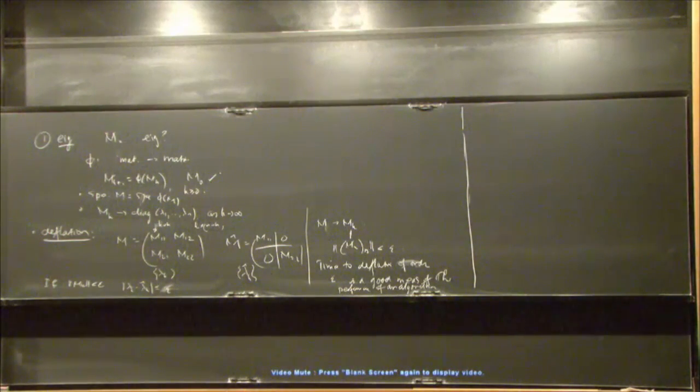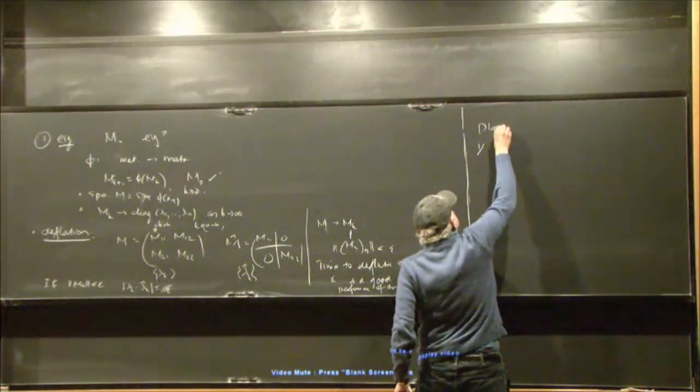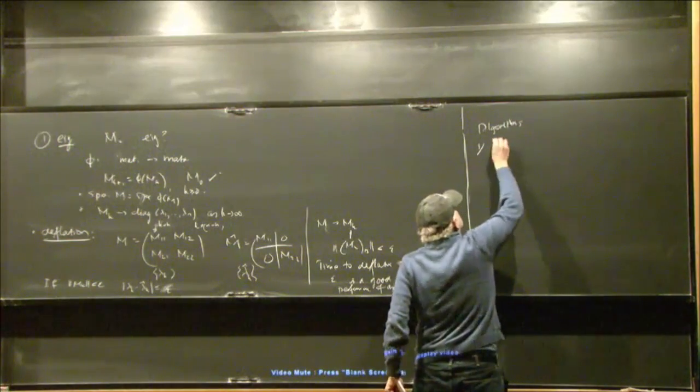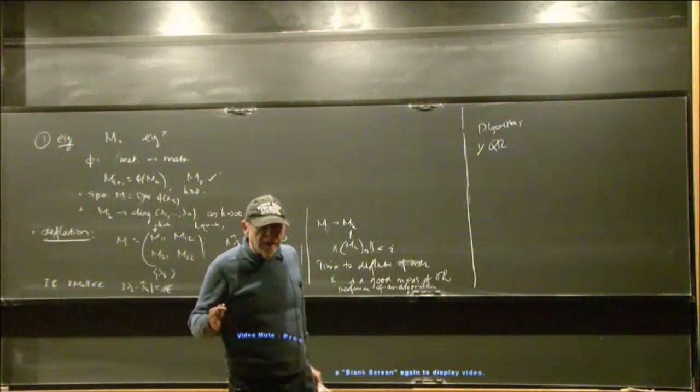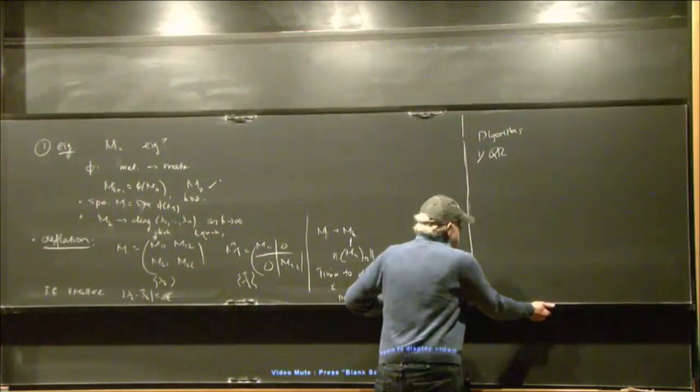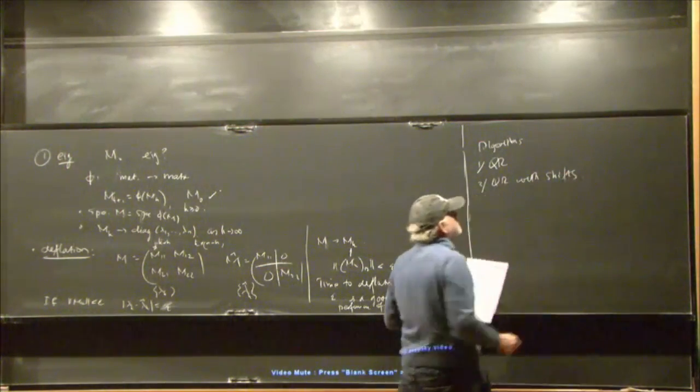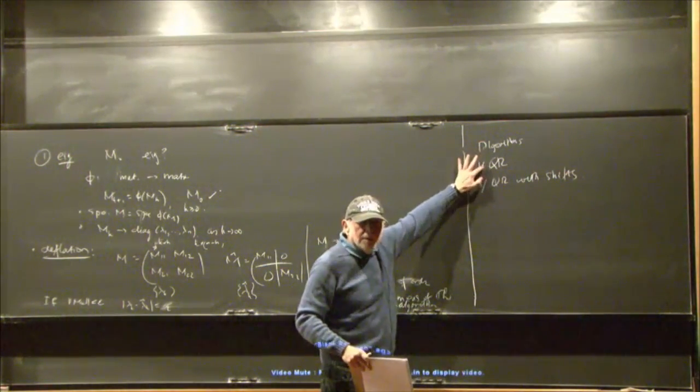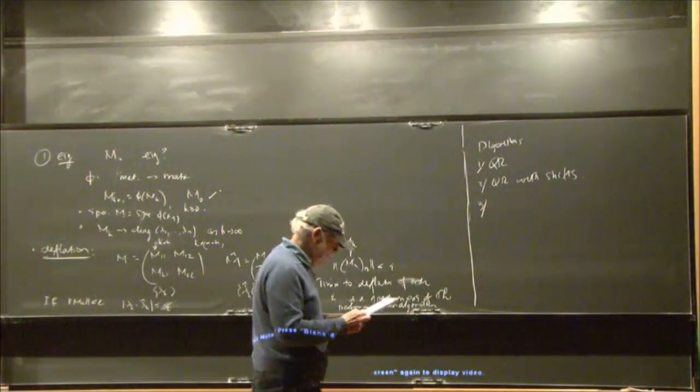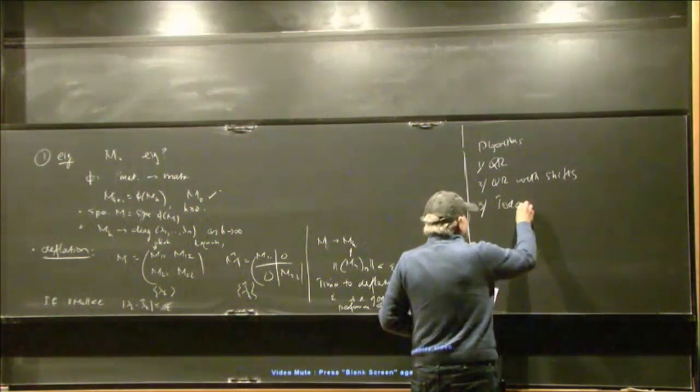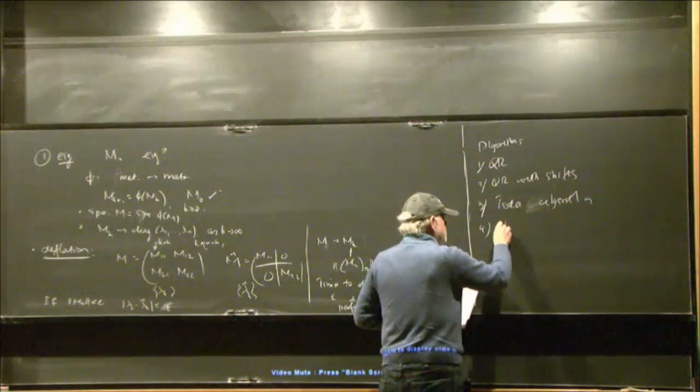So, algorithms, one is QR algorithm, which is the most famous and probably the most successful numerical algorithm there is. The next one is QR with shifts, and QR with shifts is the actual practical implementation of the QR algorithm. Next is the so-called Toda algorithm. And the fourth one is the Jacobi algorithm.